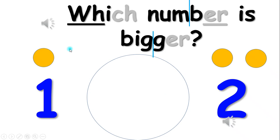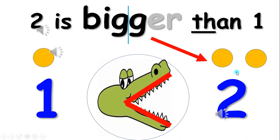Which number is bigger? One or two? Very good, you are right. Two is bigger than one because two has more dots than one. Notice how the alligator's mouth is open to the bigger number.